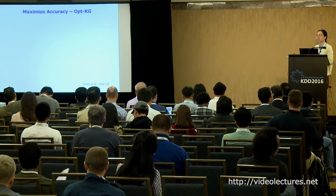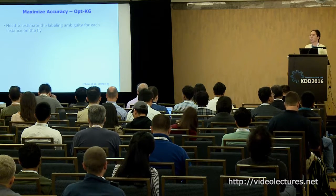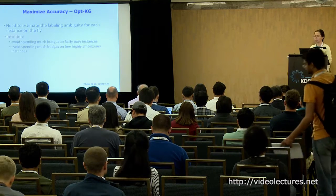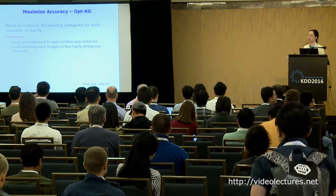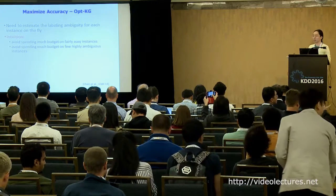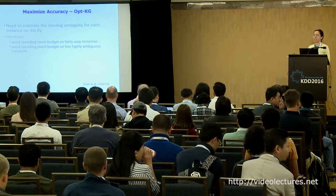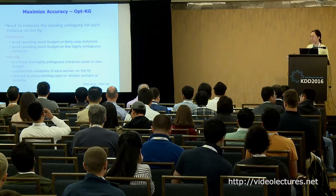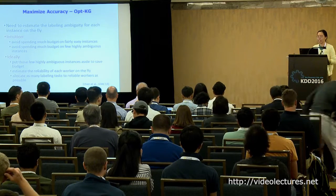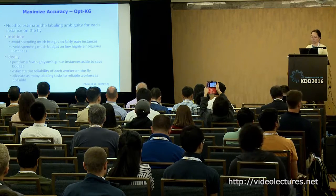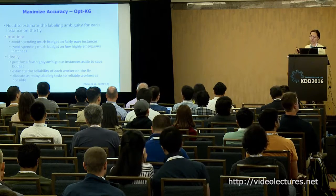This paper published in ICML 2013 tries to maximize the accuracy of the result. The main idea of this framework is to estimate the labeling ambiguity for each instance on the fly. If an instance is easy, workers may give very consensus answers and you don't want to waste your budget on those. For highly ambiguous instances, workers are very likely to disagree with each other, so you don't want to waste budget there either. If you can estimate worker reliability on the fly, you can allocate labeling tasks to reliable workers as much as possible.